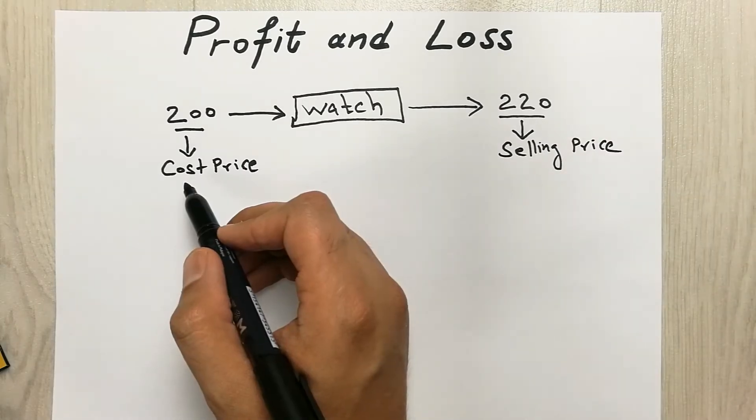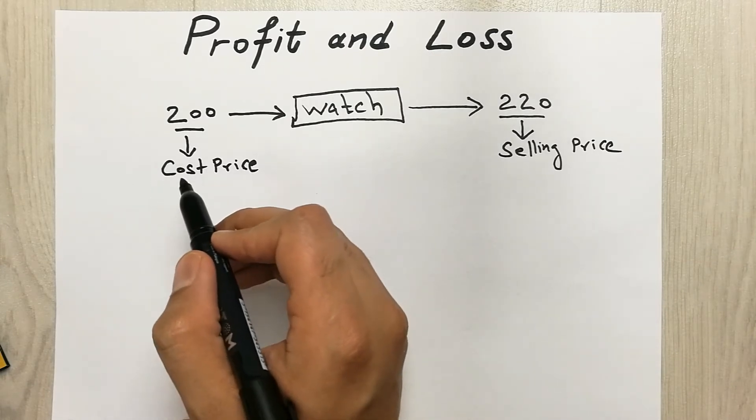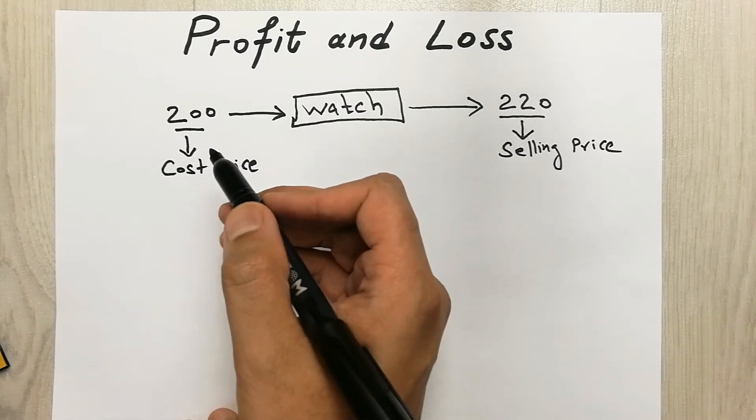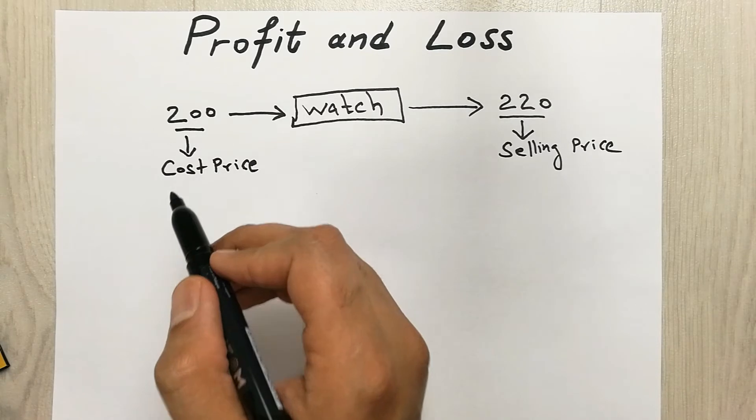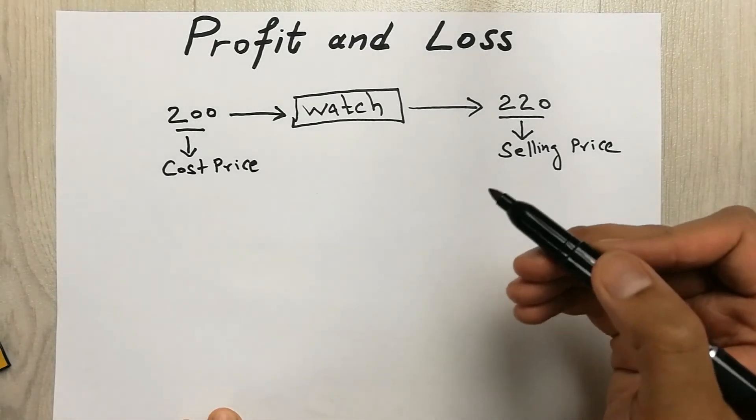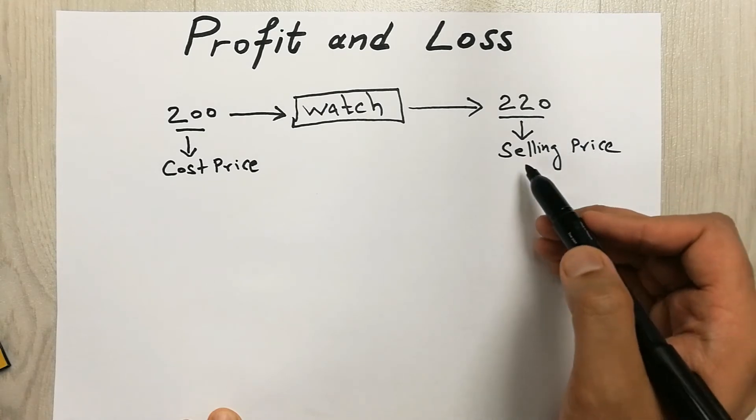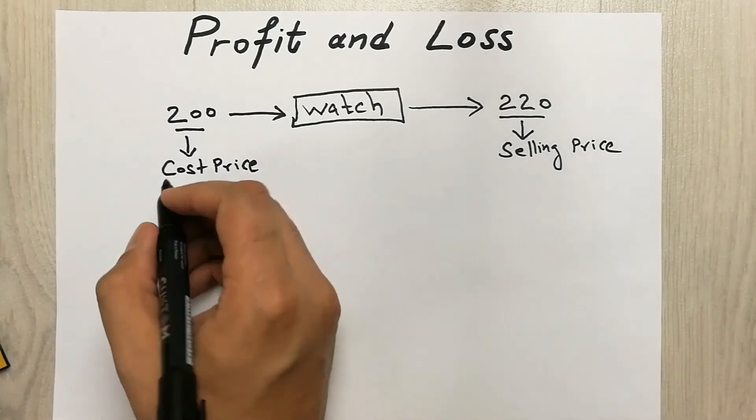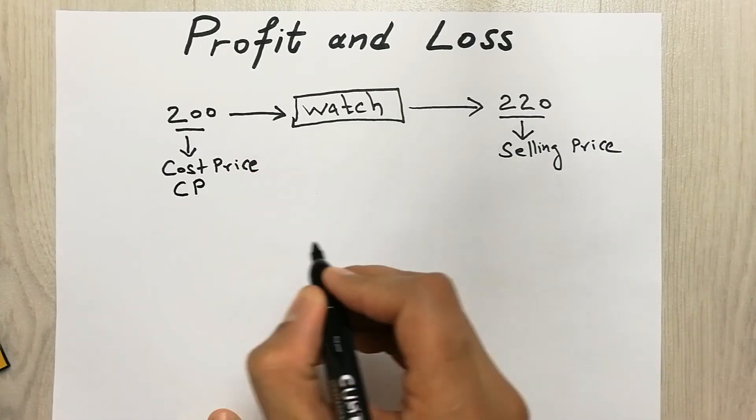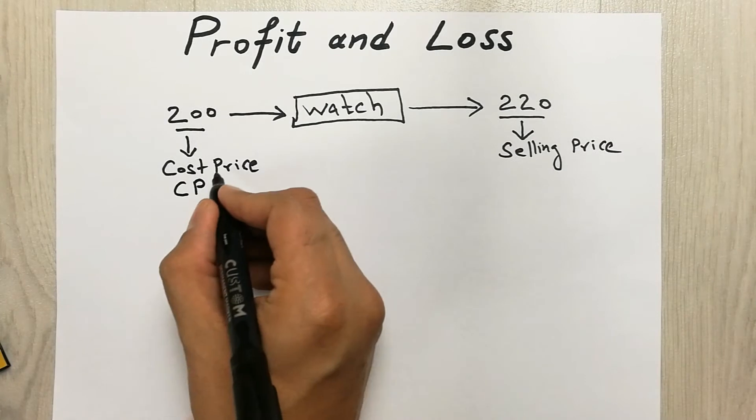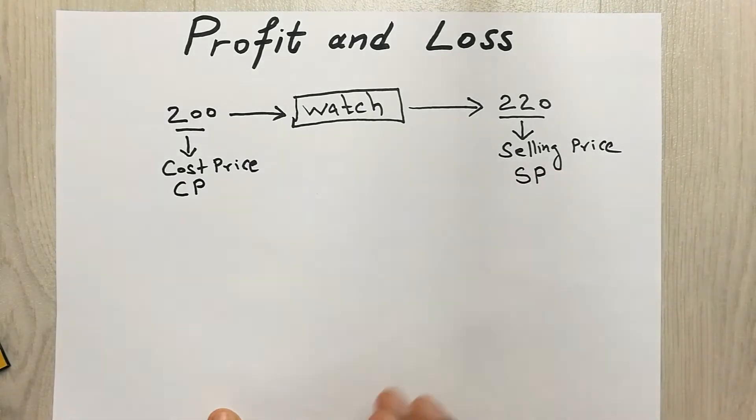So now why we call this cost price? Because you pay this price to the shopkeeper to get the watch. And let's say you want to sell it to your friend or any other person at 220, so this is your selling price. We can also say cost price as CP and selling price as SP.